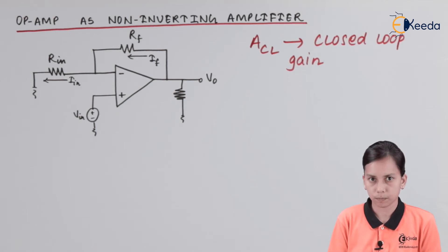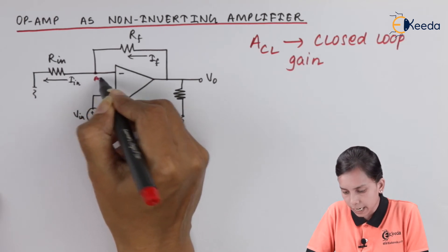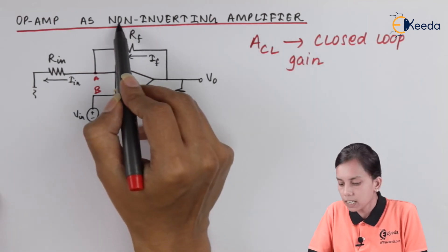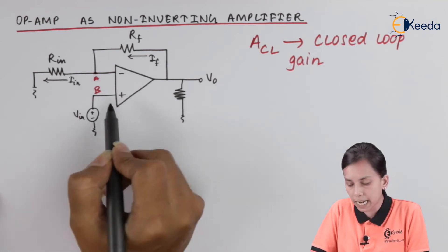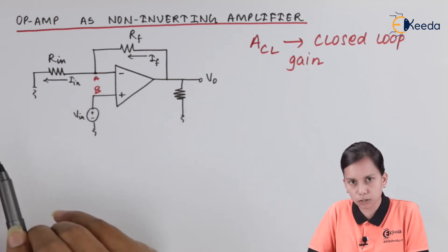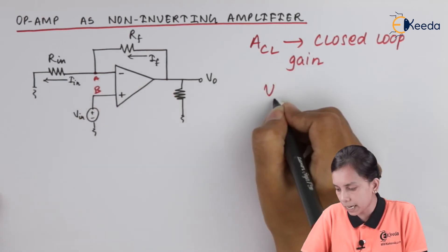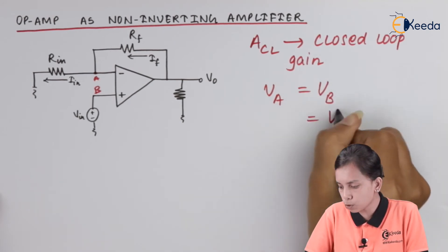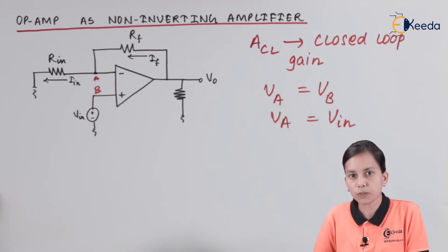Now we will use the virtual ground concept. Let's say this is our terminal A and this is our terminal B. As this is a non-inverting amplifier, the input voltage must be applied at the positive terminal. That is why V_input is applied at B, the positive terminal. By the virtual ground concept, the potential at A — that is V_A — equals V_B. Since V_B equals V_input, V_A also equals V_input.